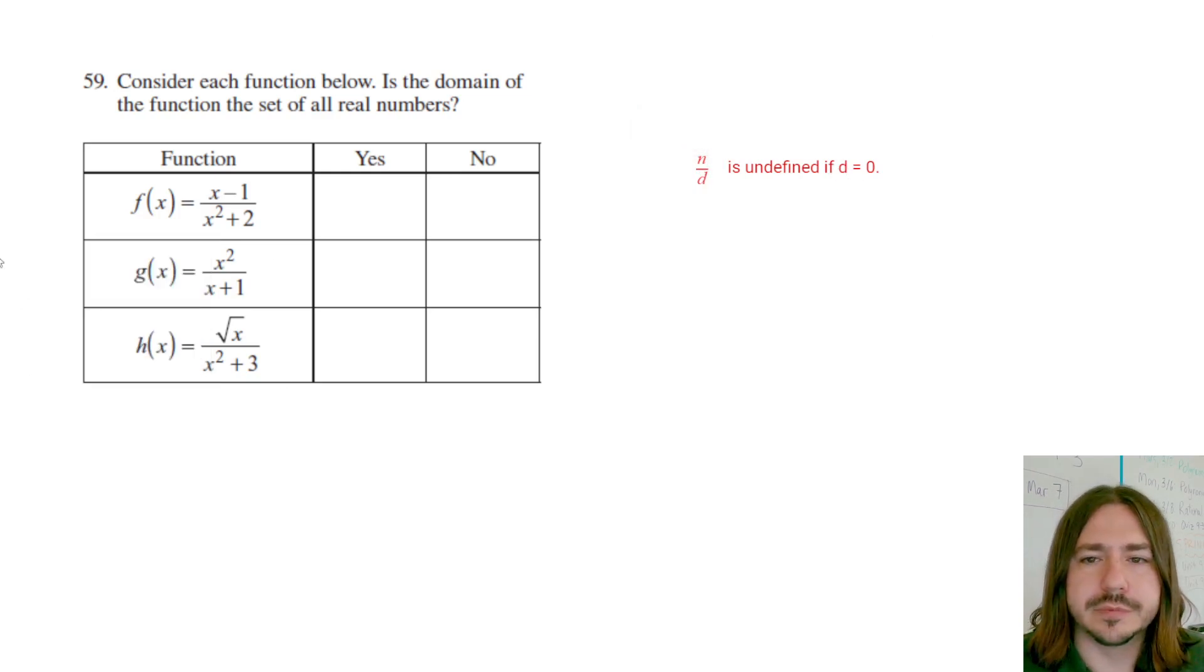I'll rename this n over d for numerator over denominator. It's undefined if the denominator is zero. So what we want to ask ourselves is, is there any x value here that I could plug in to make this denominator zero? If there is, we'll say no, the domain's not all real numbers.